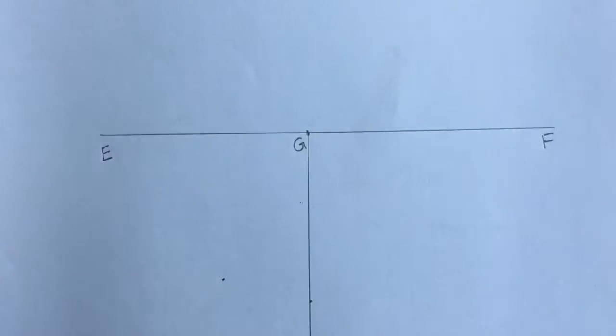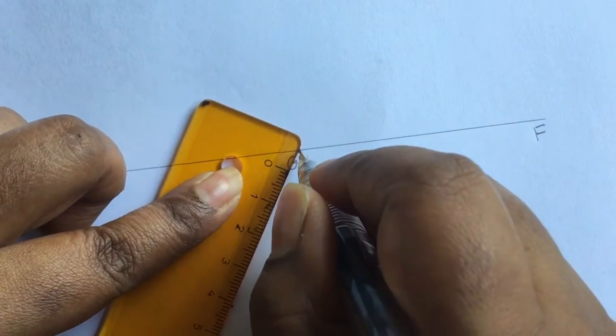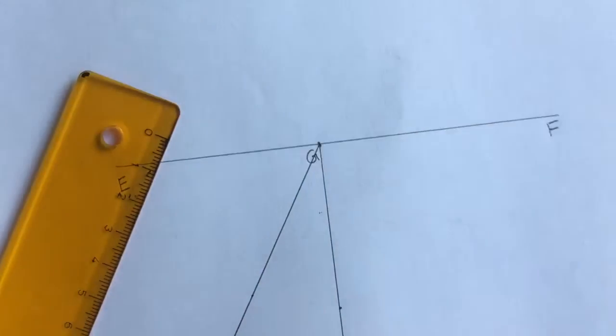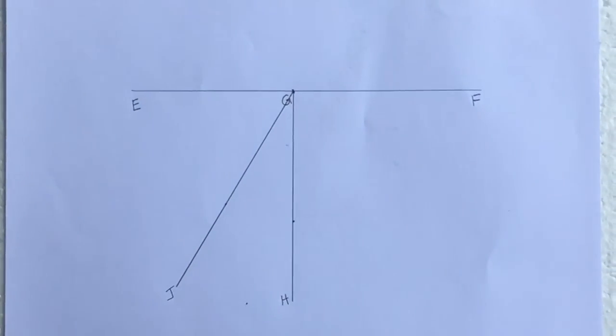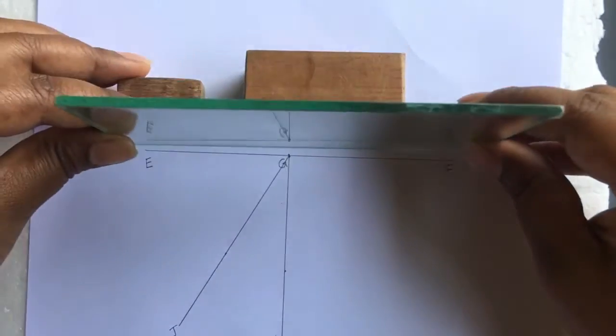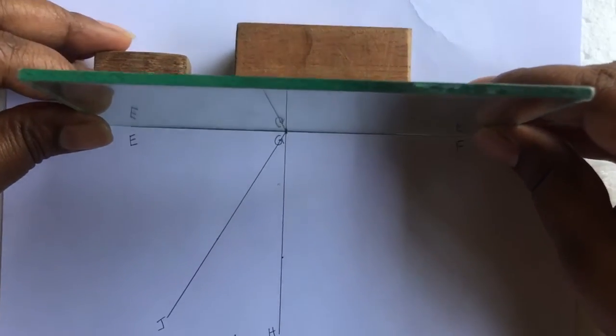Measure 30 degree from the normal. Draw a line and label it as GJ. Place this sheet on the pin board. Place the mirror so that it stands along the line EF.